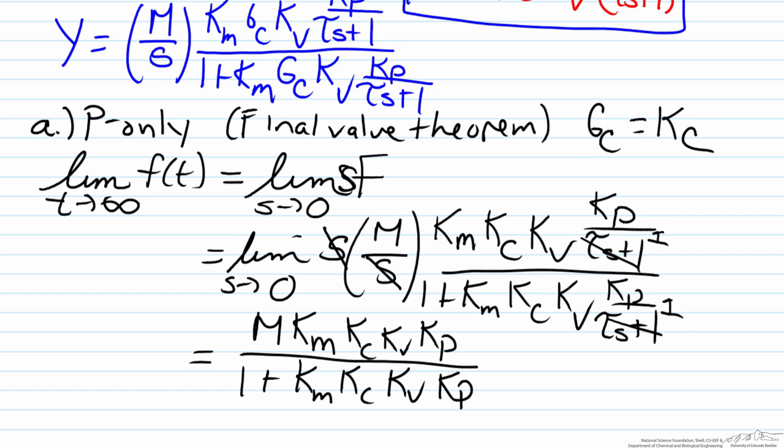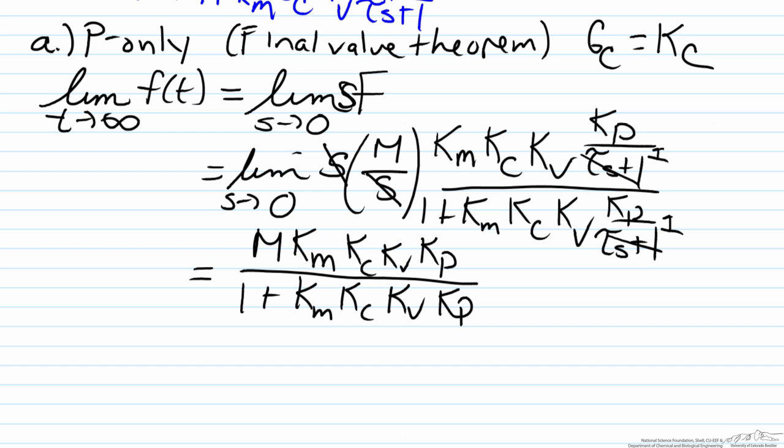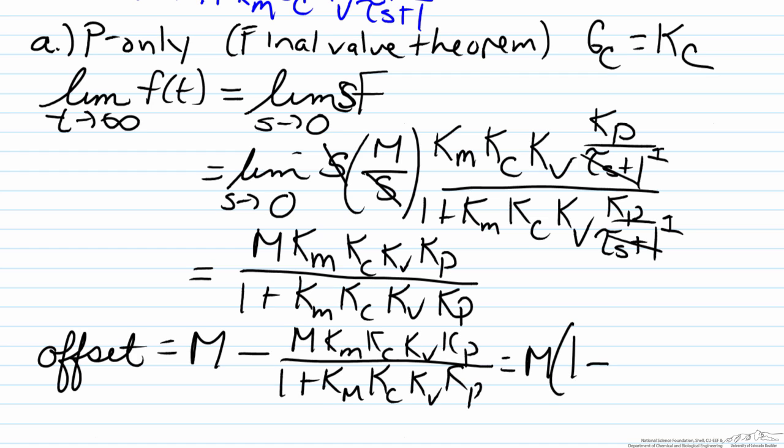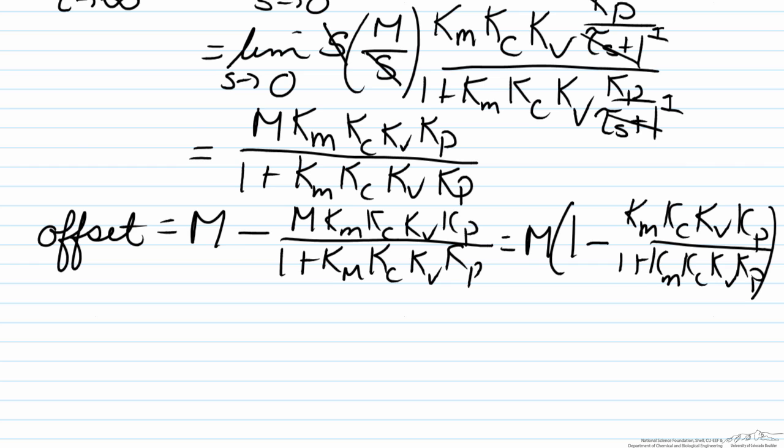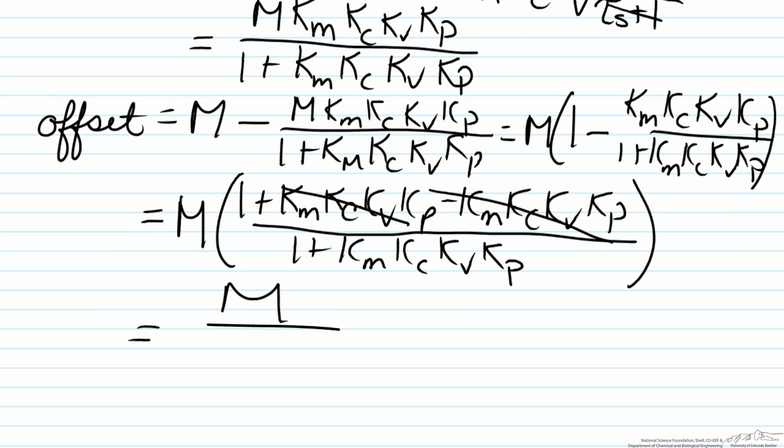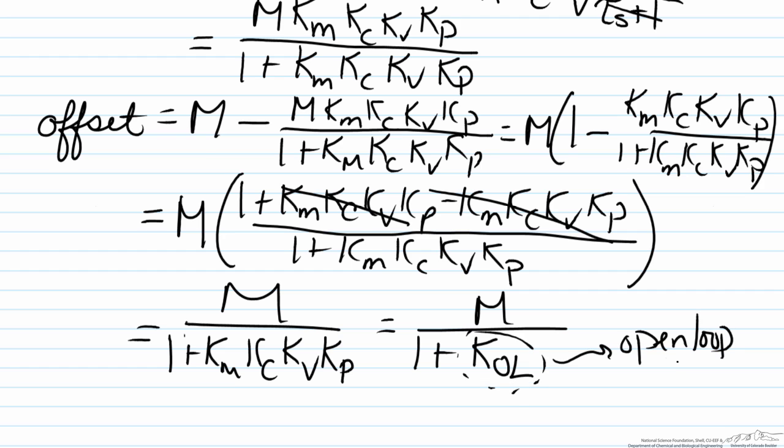As you can see this value clearly does not equal just M so that means that we have an offset. So the offset here will be equal to M, what we would want the value to be, minus this value that we have here, minus M Km Kc Kv Kp divided by one plus Km Kc Kv Kp. We can do a little bit of simplification here. And that leaves us with our final answer, which can be written as M over one plus Km Kc Kv Kp, which is often represented as M over one plus K sub ol, where K sub ol is the open loop gain, because it represents the gain of the parameters in the open loop.